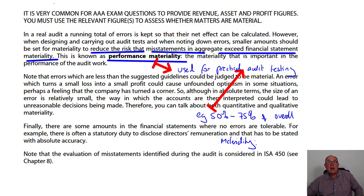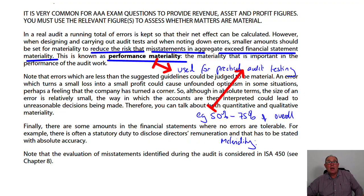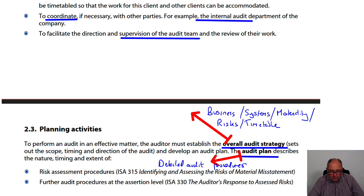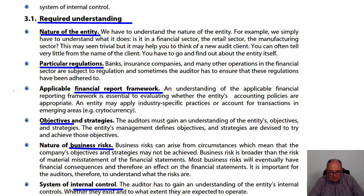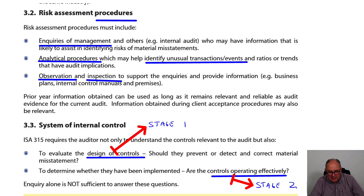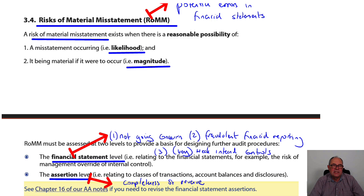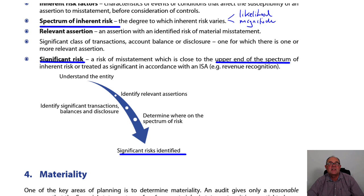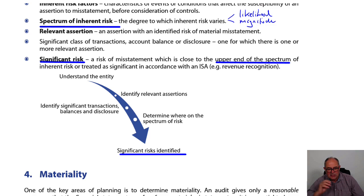So in this chapter we reminded ourselves about the audit process; why we have to do audit planning; the difference between a strategy and a plan; what we need to understand about the business before we start work and how we do that; a reminder about controls; most significantly the concept of the risk of material misstatement at the two levels — the accounts as a whole and individual balances and transactions; the new phrase 'significant risk' alongside the spectrum of risk; and finally a reminder about setting materiality at the planning stage. That's it for audit planning.